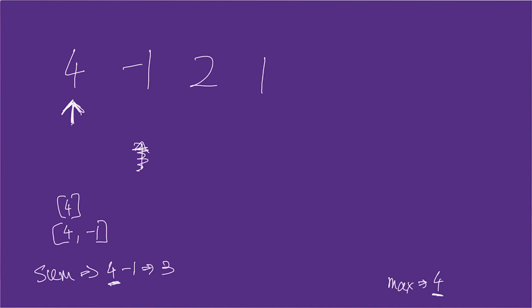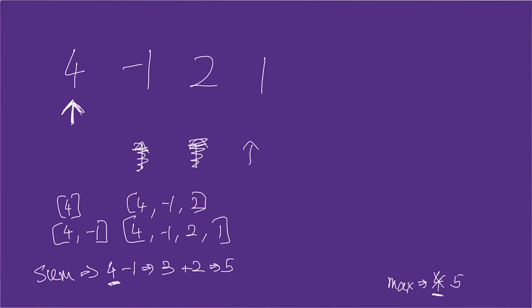Moving the second loop to two, the subarray becomes [4, -1, 2] and sum becomes five. Five is larger than max so we update max to five. Moving further to one, the subarray becomes [4, -1, 2, 1] and we do plus one to get six. Max is updated to six. Now that loop two has reached the end of the array, it's time to increment loop one to the next element.